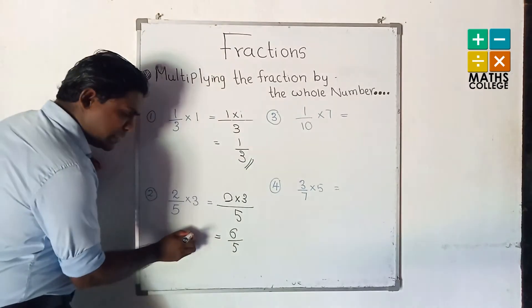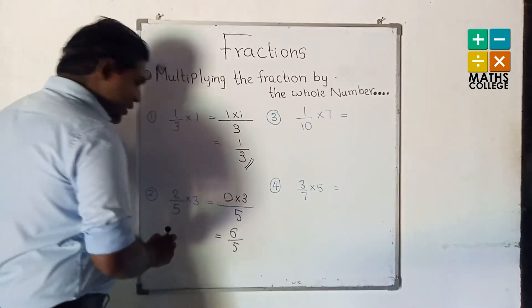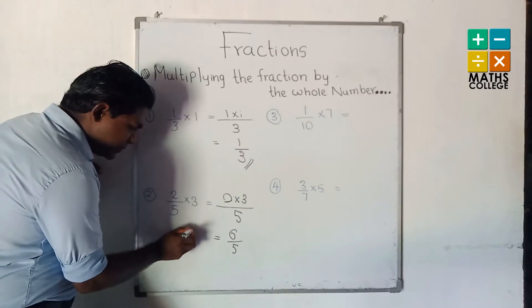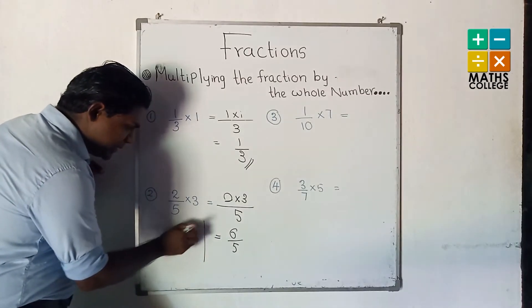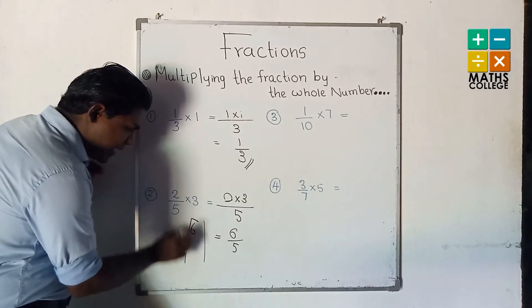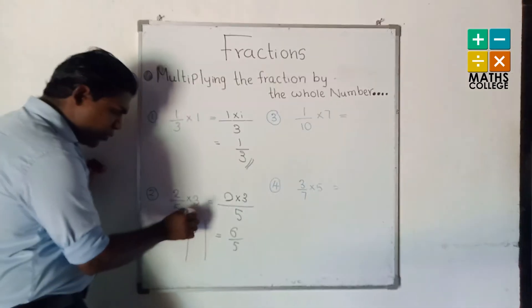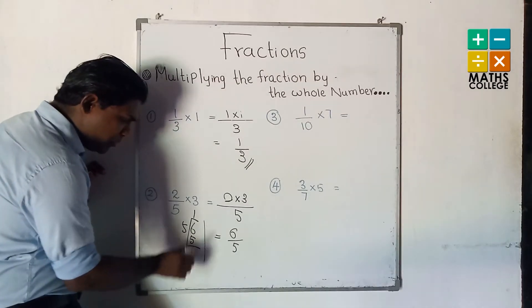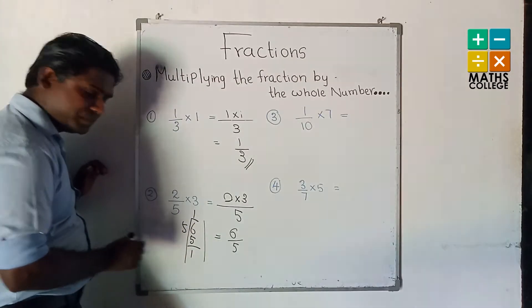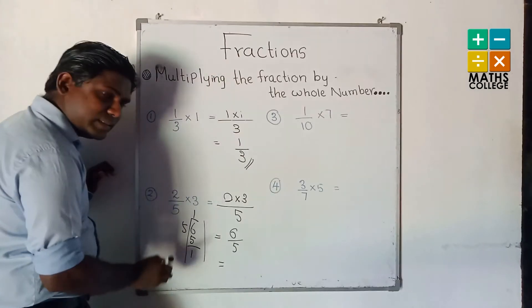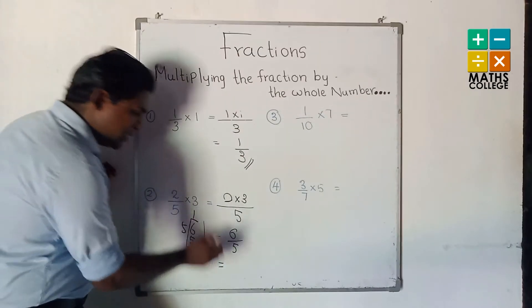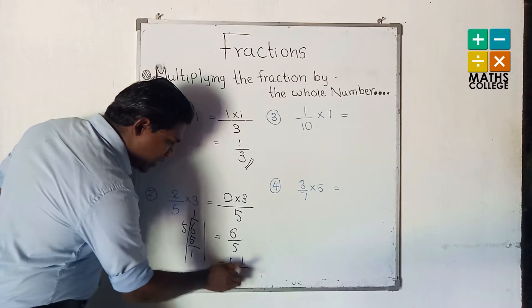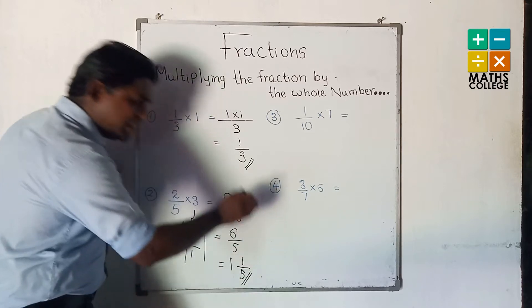How do we keep the improper fraction as an answer? We have to convert it as a mixed number. How to convert as a mixed number — you already learned how to do this. 6 divided by 5: 5 goes once, remainder is 1. The answer is 1 and 1 upon 5. The denominator does not change.